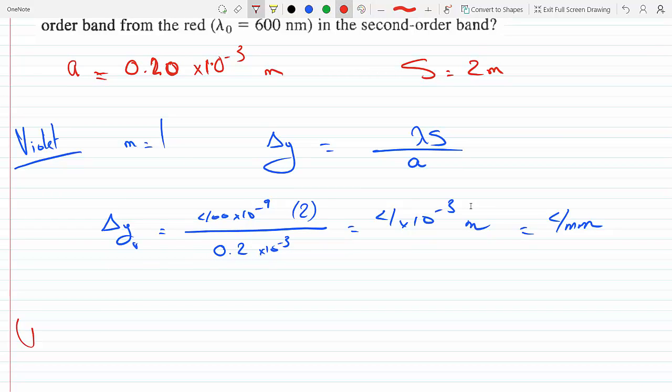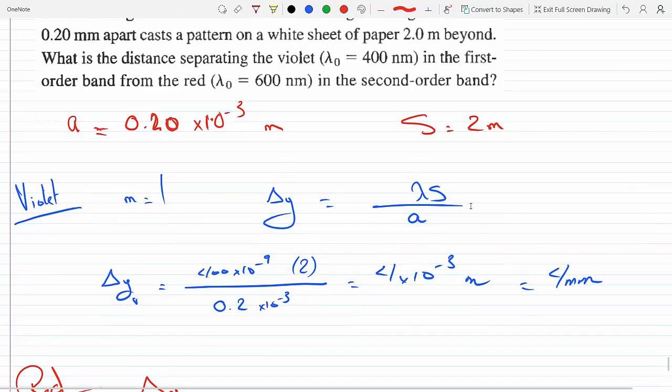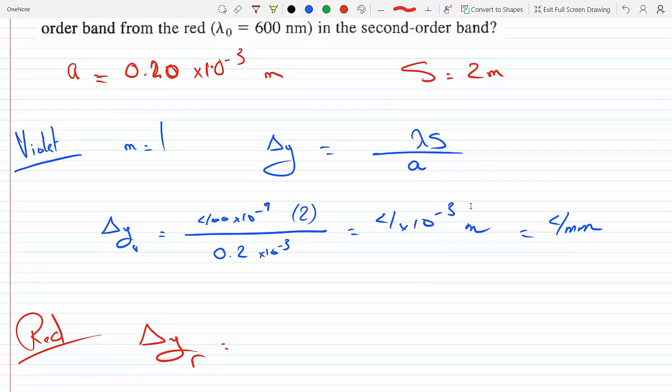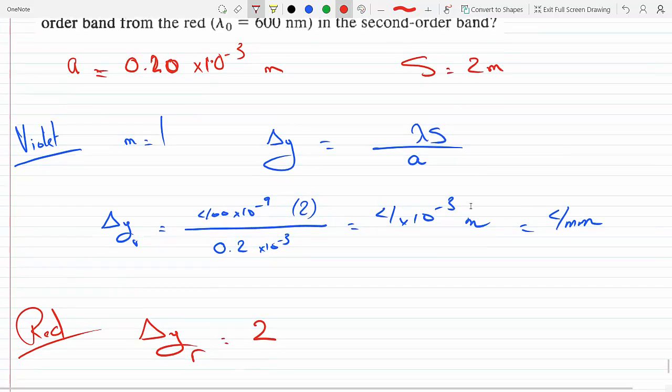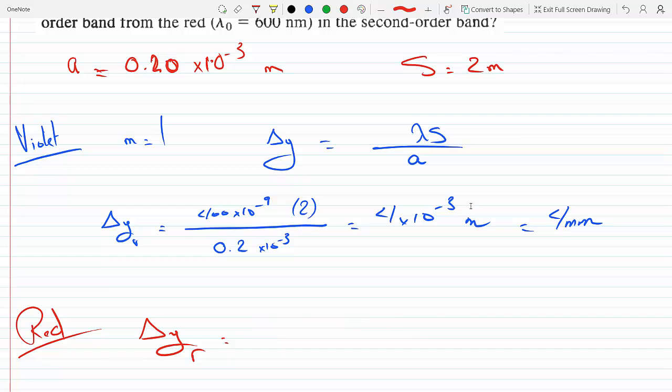For red, I might as well write it in red as well. So delta y for red is the same thing, except here since it's the second order band, we're going to have to multiply it by 2. So that's 2, m lambda s over a, so this is 2.